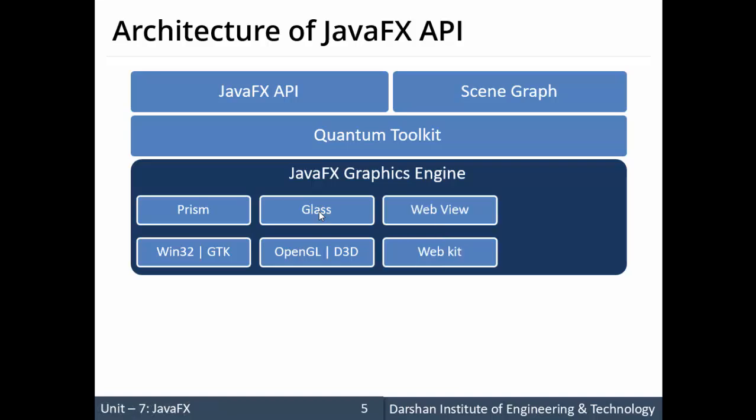The graphics engine also contains a Web View, where we load content from the web. Web View is used to process HTML content. It uses a technology called WebKit, which is an integral open-source web browser engine. This component supports HTML5, CSS, JavaScript, DOM, and SVG.